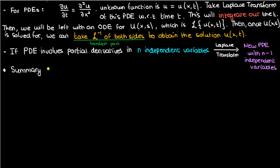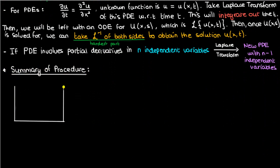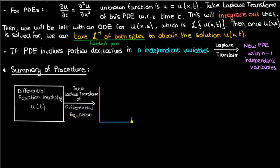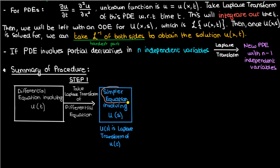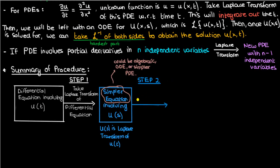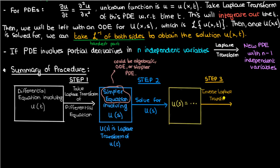For convenience, here is a summary of the Laplace transform procedure. Step one: start with the differential equation involving u of t — u could still depend on other variables like x, y, z, but we focus on t as the variable being Laplace transformed. Take the Laplace transform to end up with a simpler equation involving capital U of s. This simpler equation could be algebraic, an ODE, or a less complex PDE, but it's easier to solve than the original. Step two: solve this simpler equation for capital U of s. Step three: take the inverse transform of capital U of s to obtain an explicit equation for u of t.